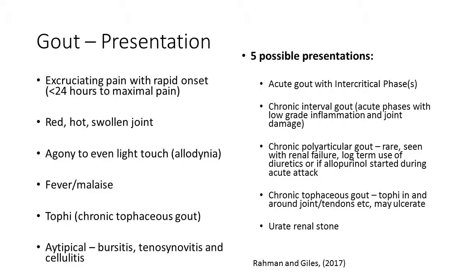The presentation of gout is very specific: excruciating pain with rapid onset — usually less than 24 hours to maximal pain — lots of erythema, temperature increase, and oedema around the joint. Red, hot, swollen, very painful — potentially with fever and malaise. Tophi can appear, particularly in chronic tophaceous gout. Atypical presentations include effects on the bursa, tendon, and cellulitis. There are five possible presentations of gout: acute gout with intercritical phases where the acute attack suppresses; chronic interval gout with acute phases and low-grade inflammation throughout; chronic polyarticular gout (rare, largely associated with renal failure and long-term diuretics); chronic tophaceous gout with tophi in and around joints and tendons causing ulceration; and urethrolithic stone.